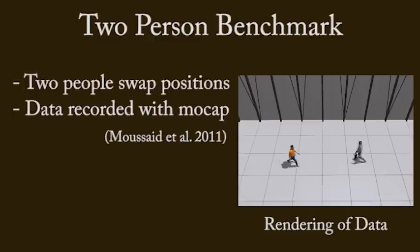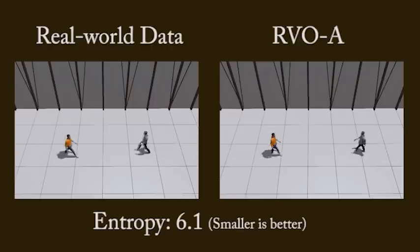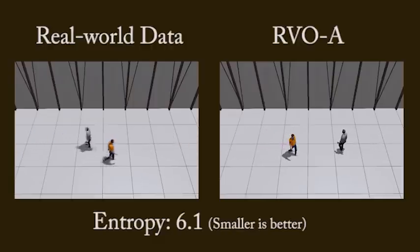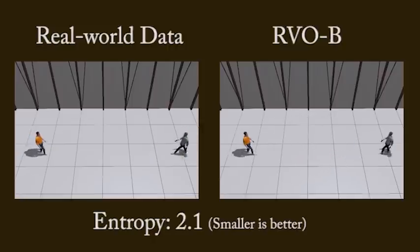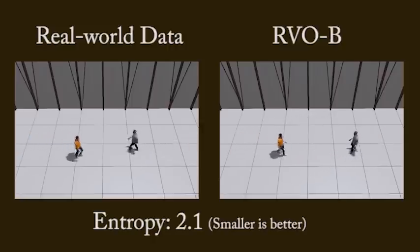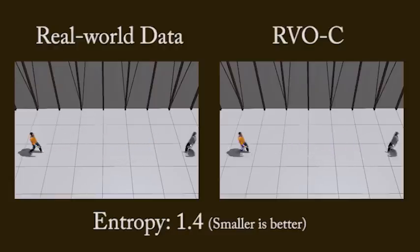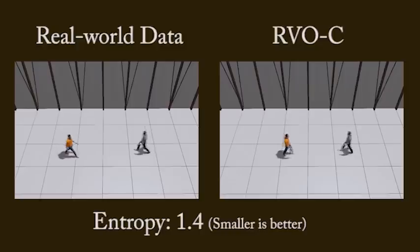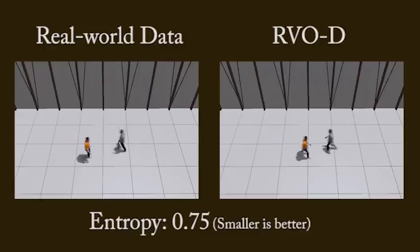We first demonstrate the qualities of the entropy metric with a simple dataset. Here is data captured of two humans swapping positions. This is a variant of RVO which poorly matches the data, and the entropy is very high. Choosing better parameters decreases the entropy and improves the match. Here is an even closer match with lower entropy. Finally, a carefully tuned simulation matches best of all and has the lowest entropy score.